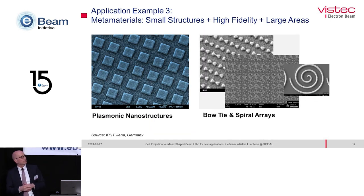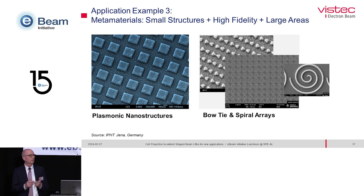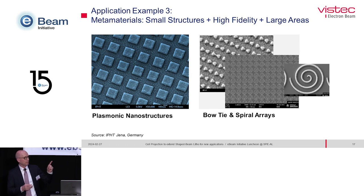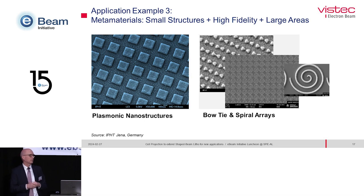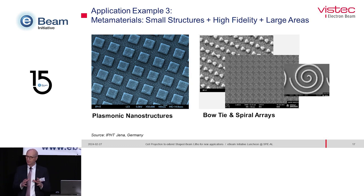The third and last example is metamaterials, which consist of very small structures requiring very high fidelity over large areas — a good job for cell projection done with a variable shaped beam machine. You see on the left hand side plasmonic nanostructures — I think this is a surface enhanced Raman scattering surface — and on the right hand side bow tie and spiral arrays. This spiral on the right hand side is a whole cell, and because the mini reticle is the physical representation of this cell, it comes out the same way in each shot, which is good for pattern fidelity in optical applications.